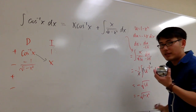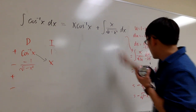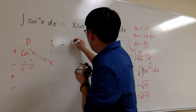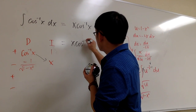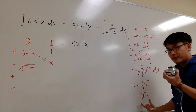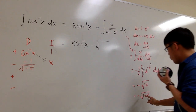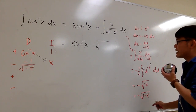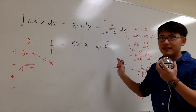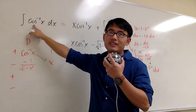This integral equals negative square root of 1 minus x squared. So putting it all together, the antiderivative is x times inverse cosine x, and adding the result — which is negative — gives minus square root of 1 minus x squared. This is the antiderivative for inverse cosine x.